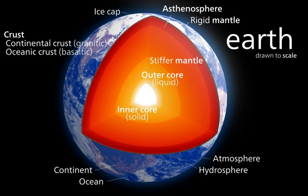Evidence for a fluid outer core includes seismology, which shows that seismic shear waves are not transmitted through the outer core because of its high temperature. Modeling work has shown that the outer core is a low viscosity fluid that convects turbulently. Eddy currents in the nickel-iron fluid of the outer core are believed to influence the Earth's magnetic field. The average magnetic field strength in the Earth's outer core was measured to be 2.5 millitesla, 50 times stronger than the magnetic field at the surface.